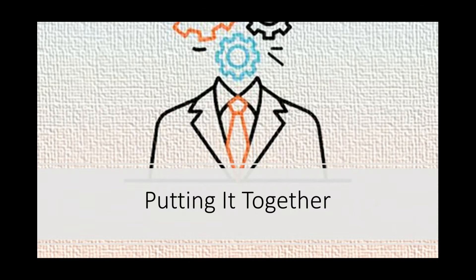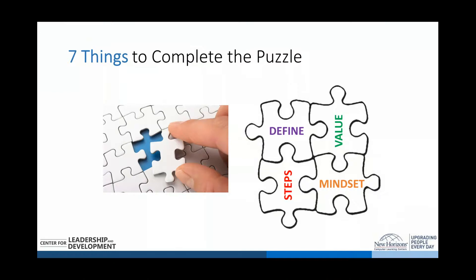This is our last segment — completing the puzzle. We've defined critical thinking, discussed its value today and in the future, covered the two-part process and mindsets that amplify our ability to think critically. We have seven more things to complete the puzzle: five bits of knowledge essential to the critical thinking process, and two techniques — especially useful in group settings — to help move the process along and improve its quality.